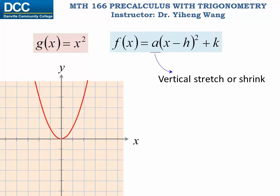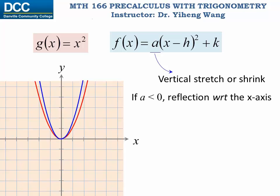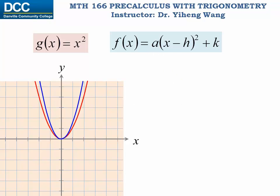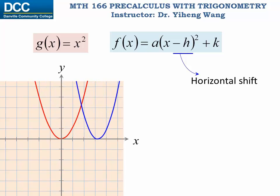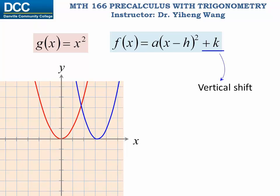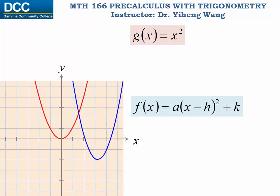The coefficient a indicates either a vertical stretch or shrink depending on its magnitude. If a is less than zero, it also indicates a reflection of the graph with respect to the x-axis. The term (x − h) inside the parentheses indicates a horizontal shift — to the right or left depending on whether h is positive or negative. The term +k indicates a vertical shift either upward or downward, again depending on whether k is positive or negative. With these transformations, the graph is complete.